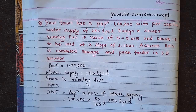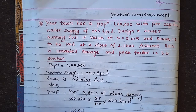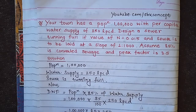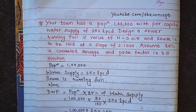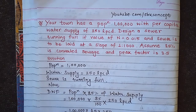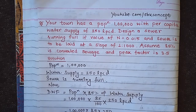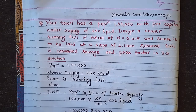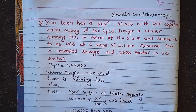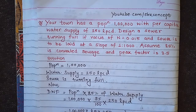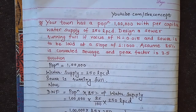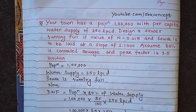Now let's convert lpcd to meter cube per second. Dry weather flow equals 1,00,000 into 85 into 250, divided by 100 into 1,000 into 24 into 60 into 60. This gives us 0.246 meter cube per second.